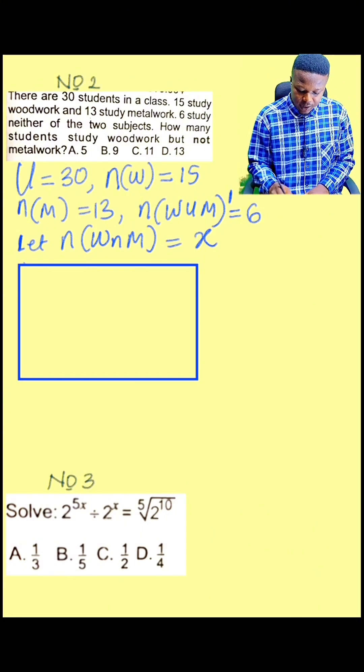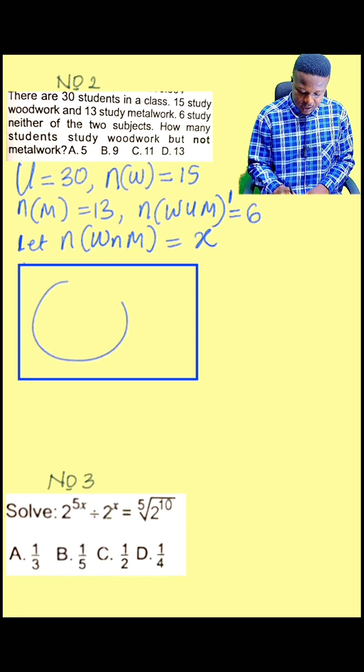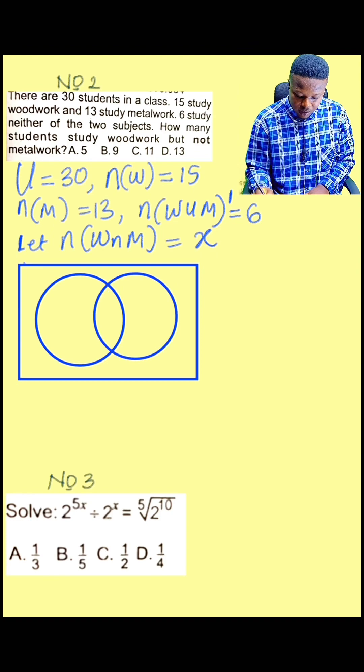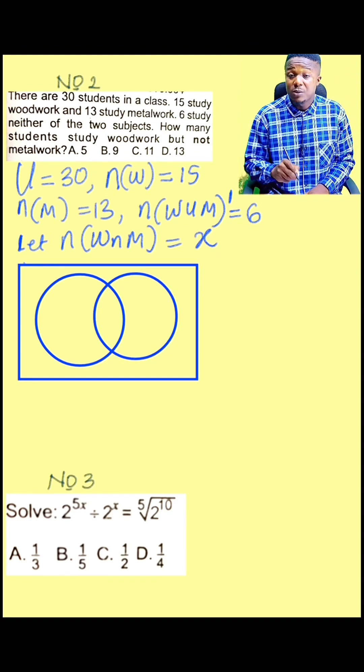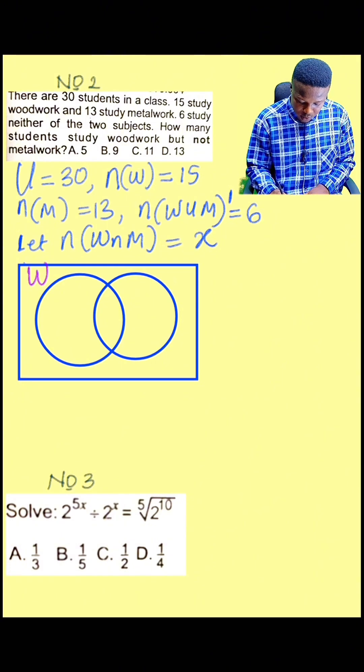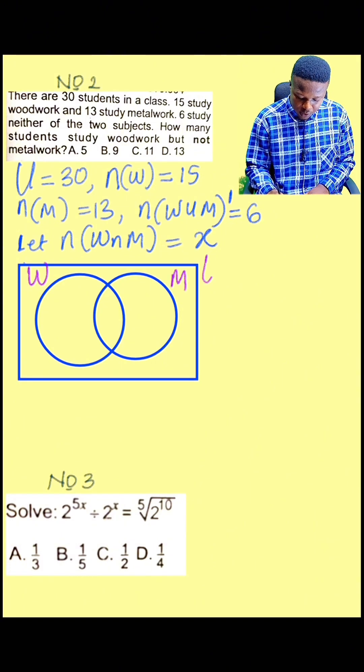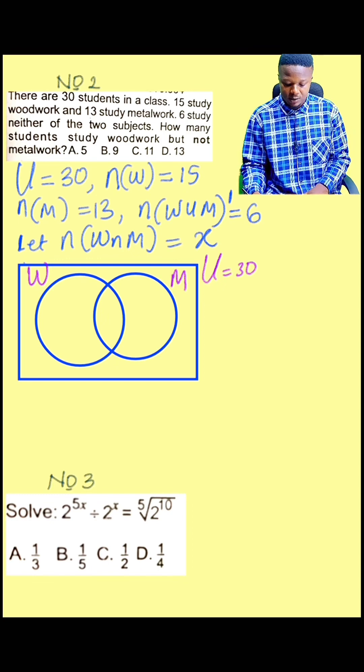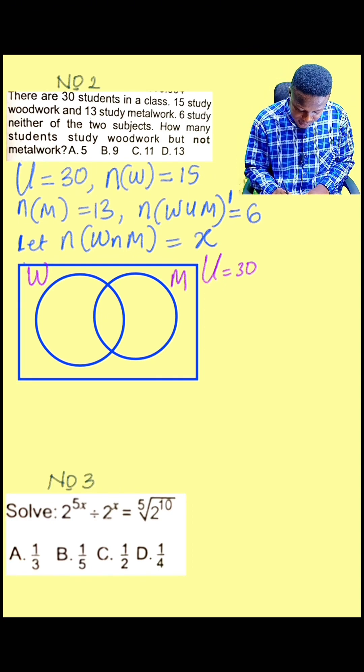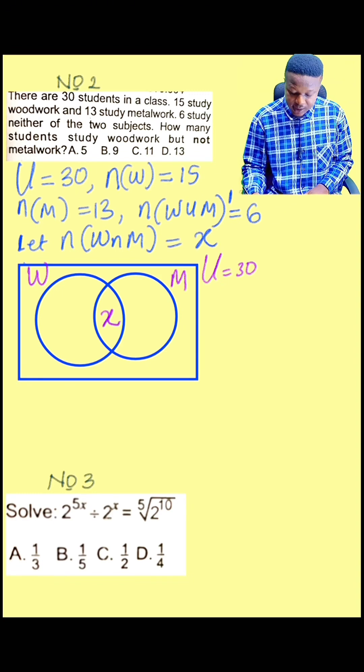This is a Venn diagram which comprises of rectangle and circles. The circles represent the subset of the universal set. So I can call this one woodwork and call this metal work. We know that our universal set is 30. Then X is representing the intersection. Look at where they intersect, you call it X.